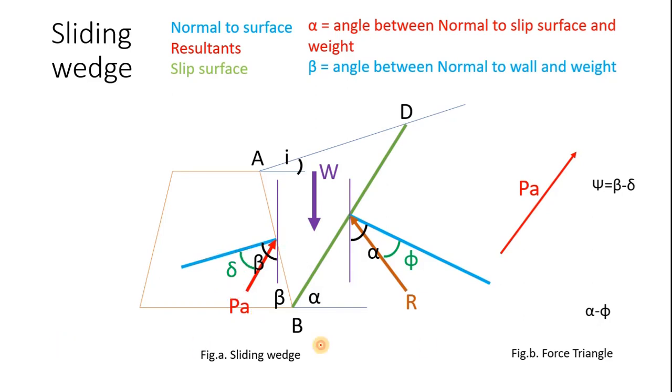Now we will draw the force triangle. To draw force triangle, we will shift these three vectors parallelly. PA is shifted parallelly here. Similarly, R is shifted parallelly here, and W weight is shifted parallelly here.